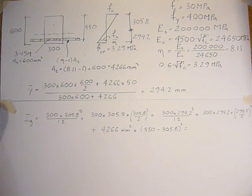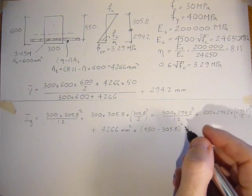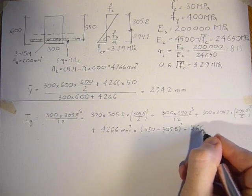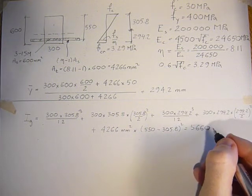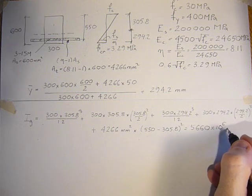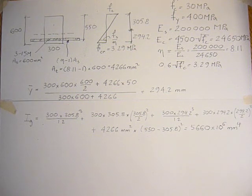plus the rebar transform area, 4266 times 550 minus 305.8, squared. That comes out to 5,660 times 10 to the sixth millimeters to the fourth.